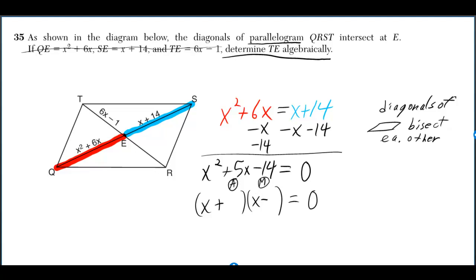The only factors of 14 are 1 and 14, and 7 and 2. If we put 7 here and 2 there, 7 times negative 2 is negative 14.